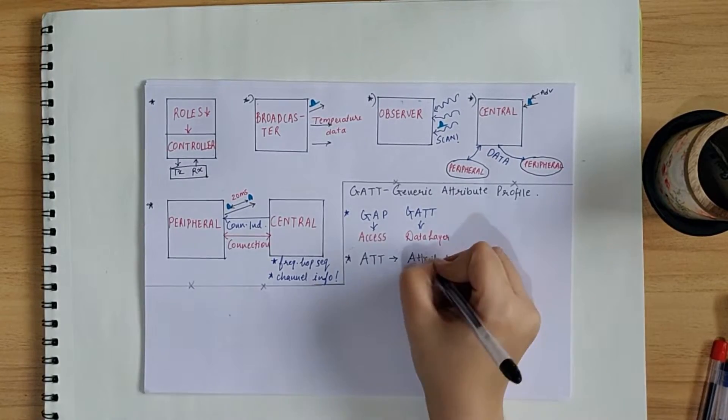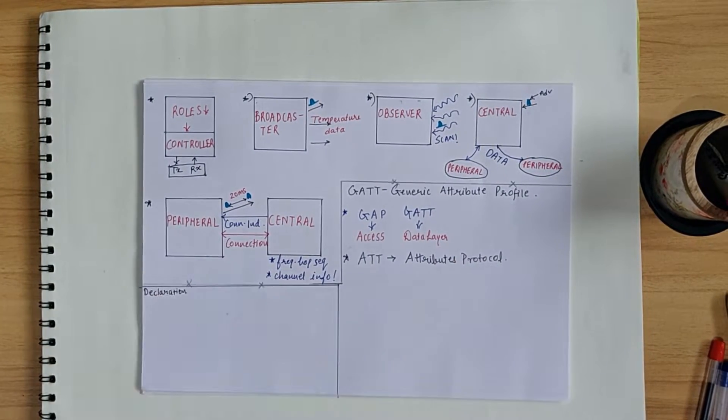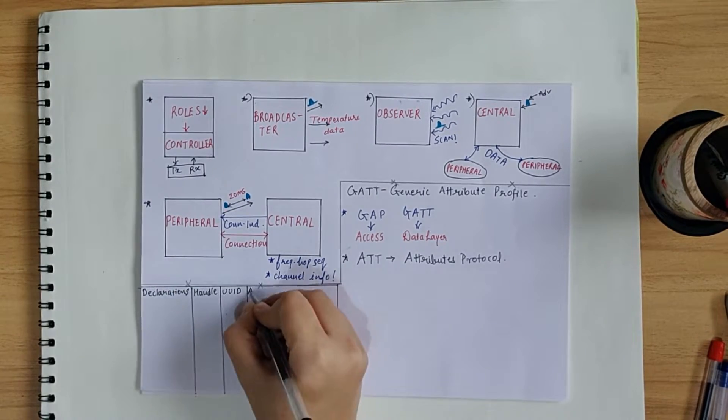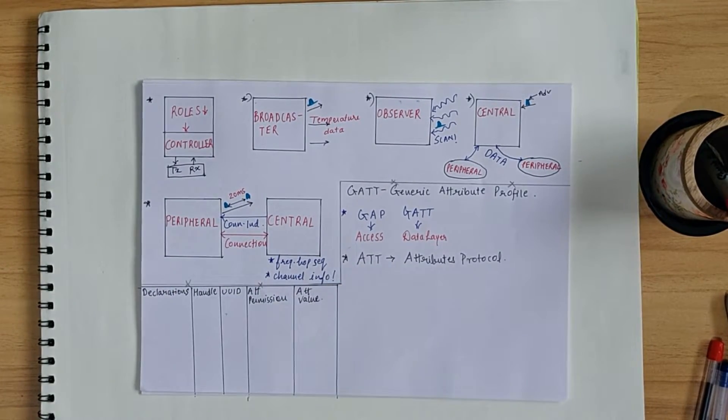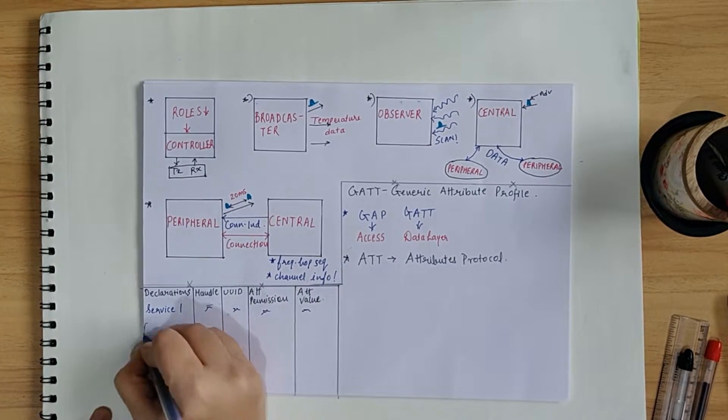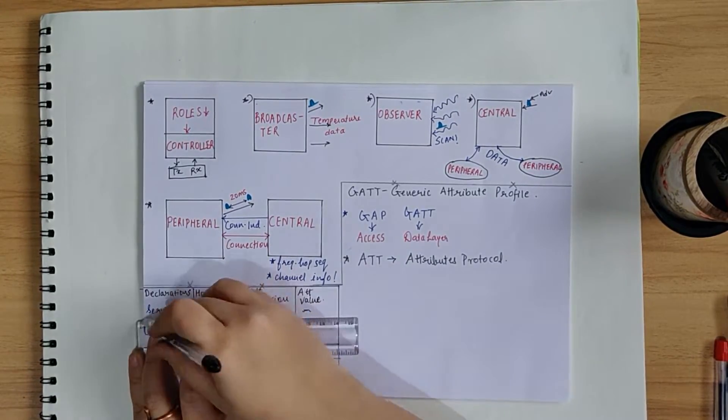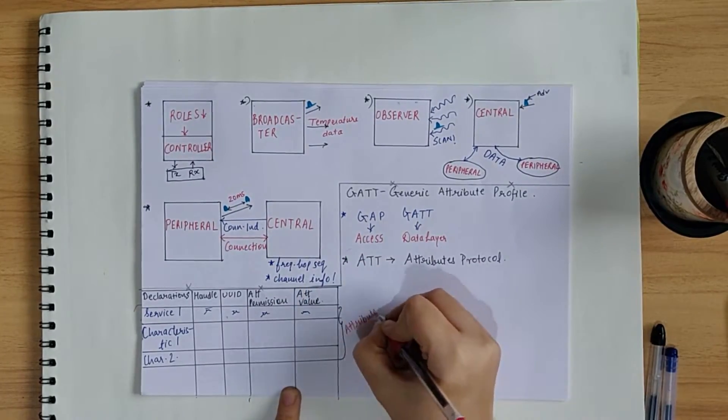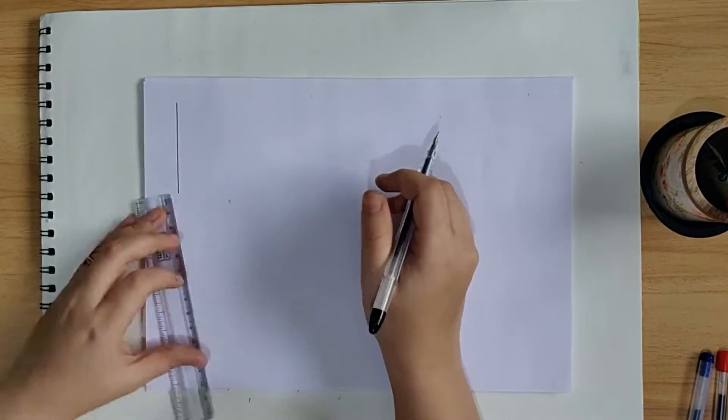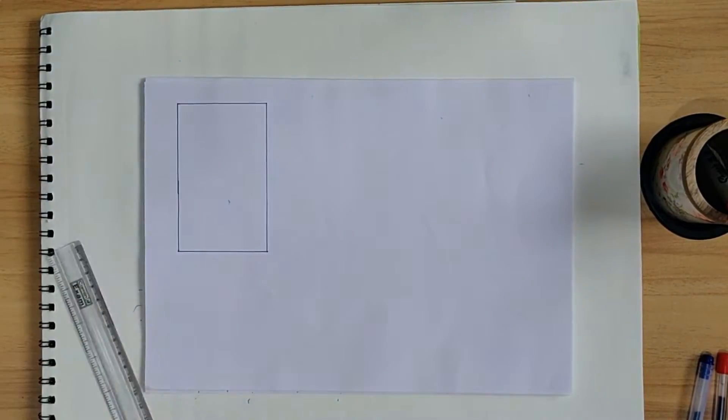ATT is used to store something called as Services, Characteristics, and Related Data, which are called Attributes, in a simple lookup table using 16-bit IDs for each entry. We'll quickly understand what services and characteristics are, but right now, just hang on. So, now let's take a look at the roles within GATT.